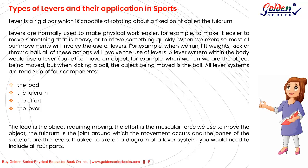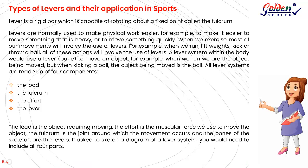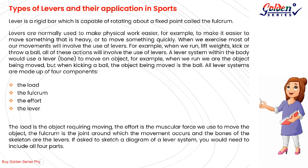A lever system within the body uses a bone as the lever to move an object. For example, when we run we are the object being moved, but when kicking a ball, the ball is the object being moved. All lever systems are made up of four components: the load, the fulcrum, the effort, and the lever. The load is the object requiring moving; the effort is the muscular force used to move the object; the fulcrum is the joint around which movement occurs; and the bones of the skeleton are the levers. If asked to sketch a diagram of a lever system, you would need to include all four parts.